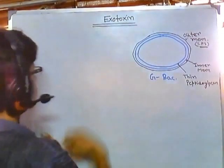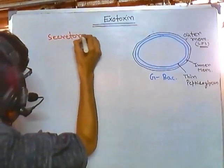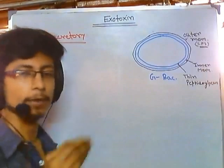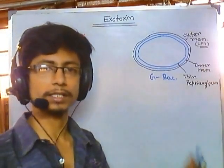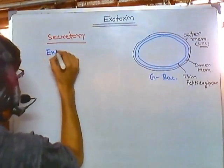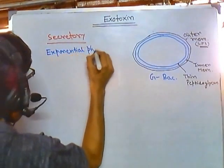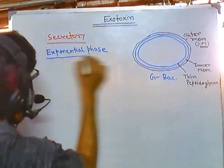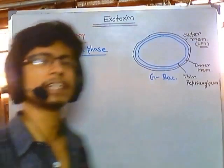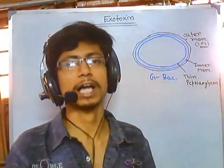Exotoxins are secretory in nature. Bacteria produce them at a particular time in the bacterial growth cycle — during the exponential phase, also called the log phase. When bacteria are dividing and growing very rapidly, they produce and secrete these exotoxins in higher amounts.